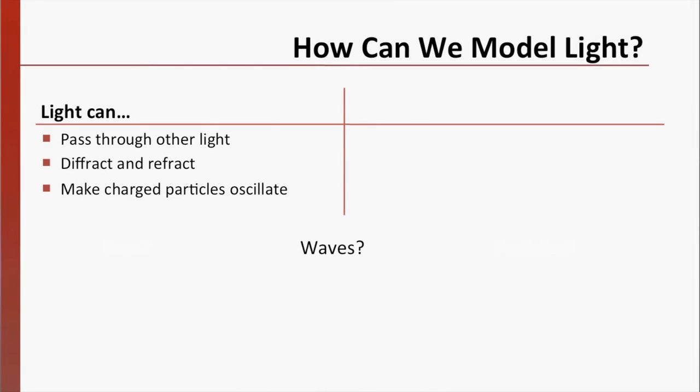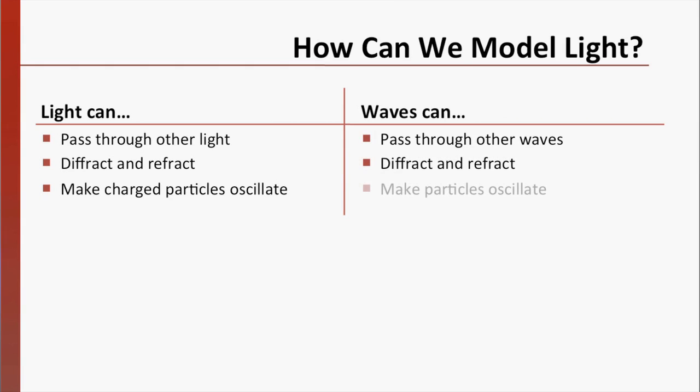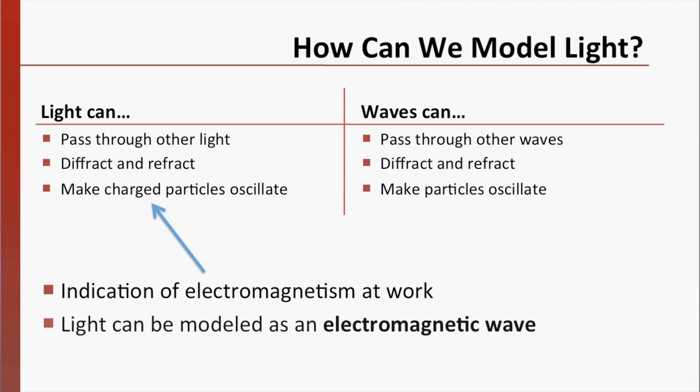If we consider waves, we know that waves can pass through each other, that they can diffract and refract, and that waves can make particles oscillate. These match the properties of light that we chose very well. The fact that light specifically makes charged particles oscillate is an indication that we are likely dealing with an electromagnetic phenomenon. Therefore, we can model light as an electromagnetic wave.